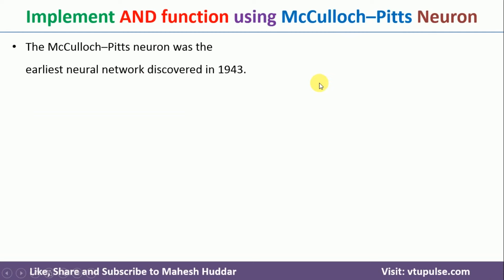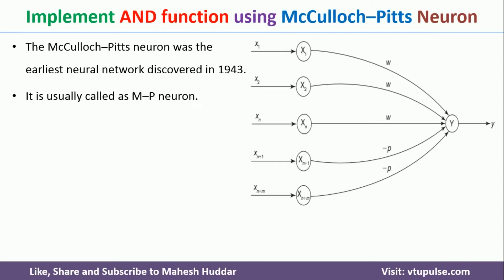McCulloch-Pitts Neuron is one of the oldest neural networks, discovered in the year 1943, and is also called the MP Neuron. The architecture of the MP Neuron has two layers: the input layer and the output layer. The input layer neurons are connected to the output neuron via directed edges, and the weights are of two types — positive and negative. The excitatory nodes have positive weight and the inhibitory nodes have negative weight.